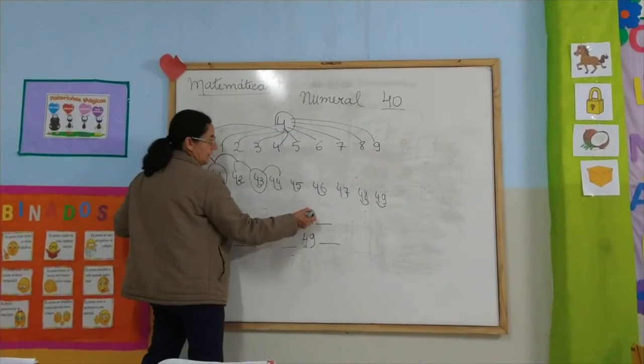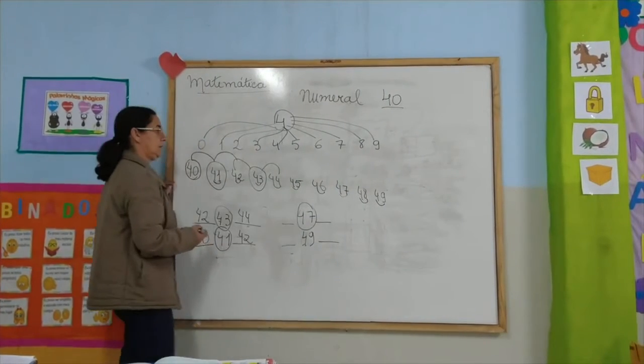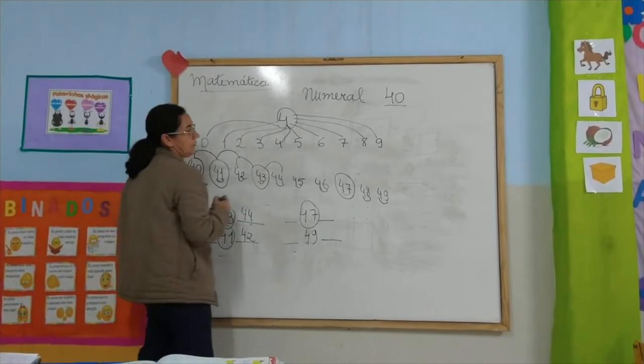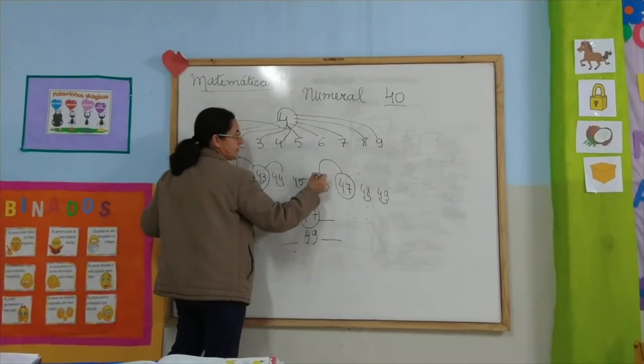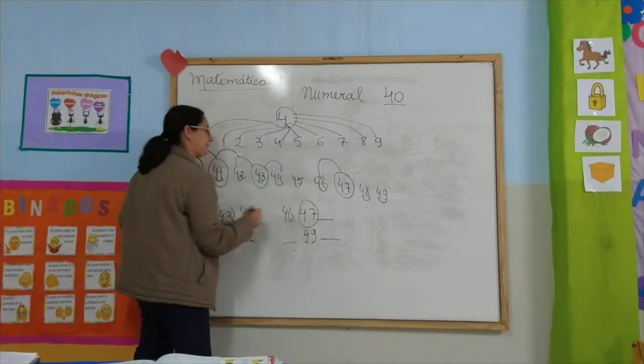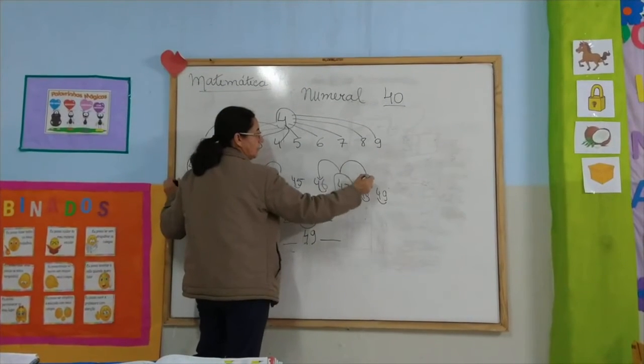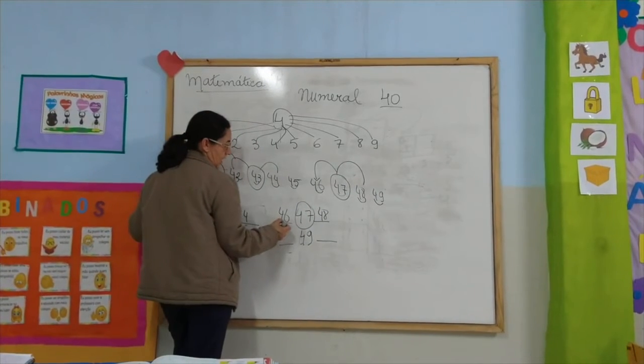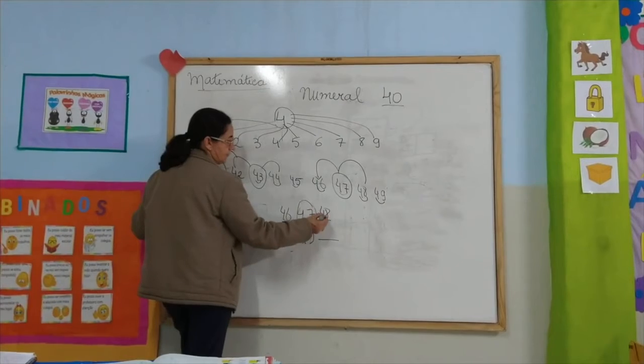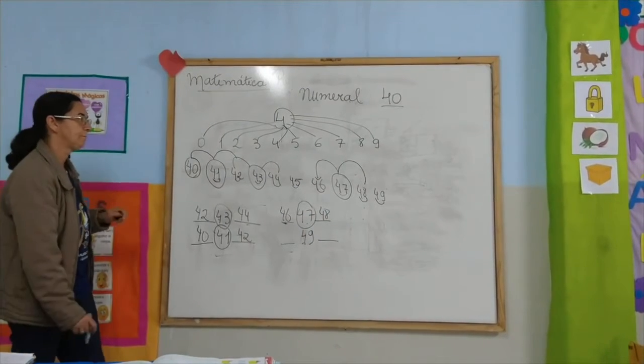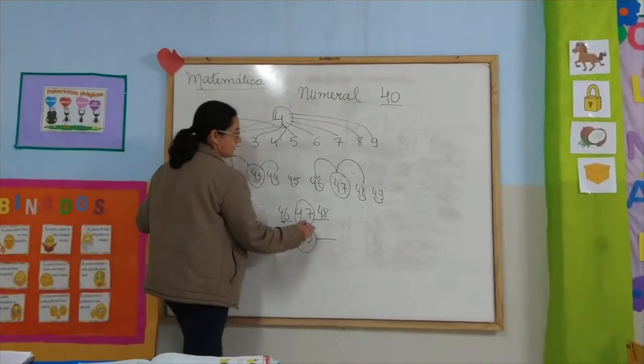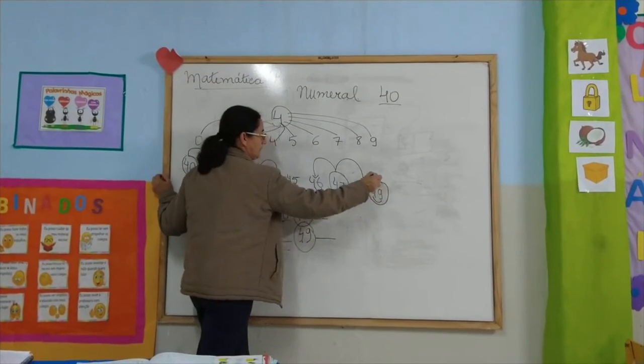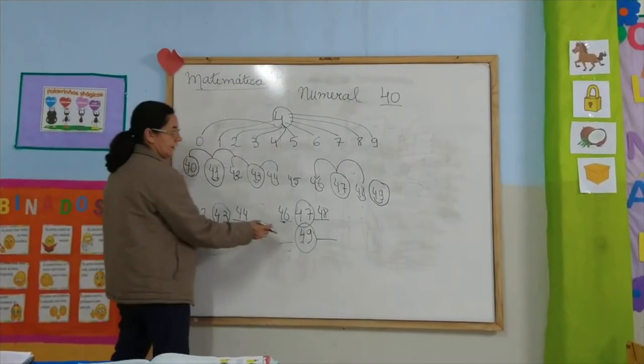Aqui eu tenho o número 47, vamos localizar aqui na sequência. Olha ele aqui, depois de 46: 47. Vizinhos de 47: um mora antes, quem mora antes, 46. E um mora depois, 48.